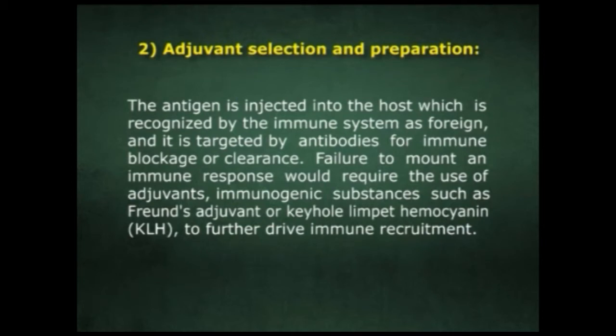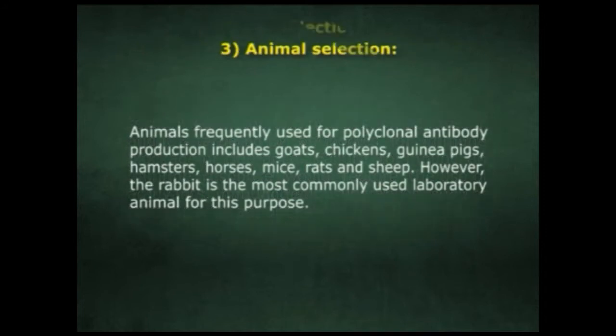The second step is adjuvant selection and preparation. The antigen is injected into the host, which is recognized by the immune system as foreign and targeted by antibodies for immune blockage or clearance. Failure to mount an immune response would require the use of adjuvants — immunogenic substances such as Freund's adjuvant or keyhole limpet hemocyanin (KLH) — to further drive immune recruitment.